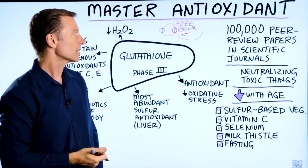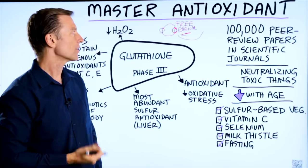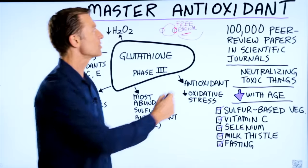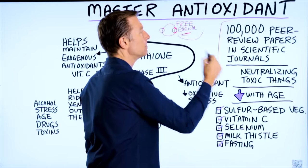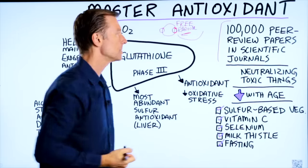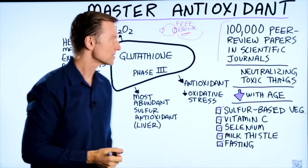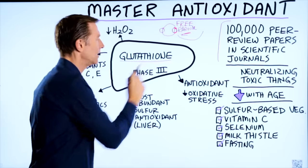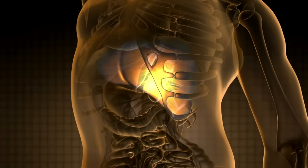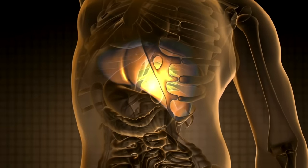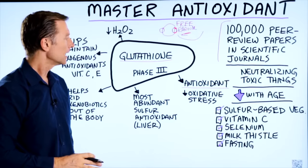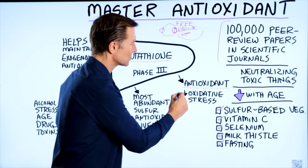They become the free radical and that can create all sorts of damage. Glutathione has been majorly studied — there are over 100,000 peer-reviewed papers in scientific journals on this one compound, glutathione. It's the most abundant antioxidant in the liver, but all your cells make it, and it reduces oxidative stress.